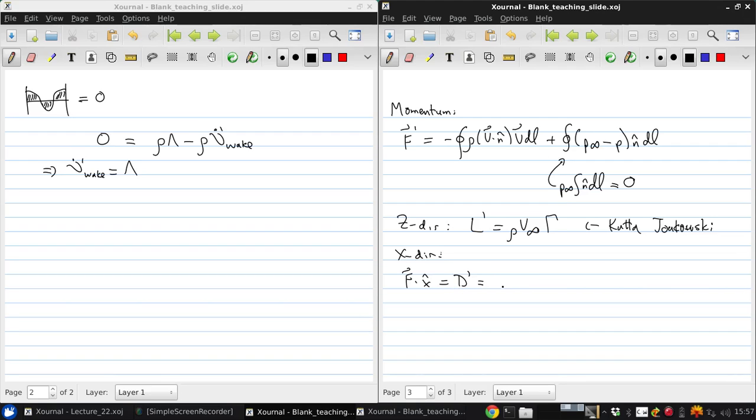And so this is negative the integral around the control volume of V dot N times V dot X, now that we're only looking at the X component, dL plus the integral around the control volume of P infinity minus P times N dot X times dL.